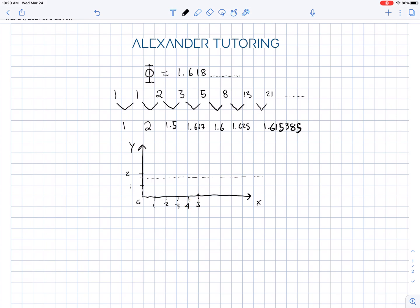Term 1 is 1, term 2 is 2, term 3 is 1.667, which is a little bit above phi. Next one is 1.6, which is a little bit below, and then it's 1.625, which is just a little bit above, and then 1.615, which is just a little bit below.